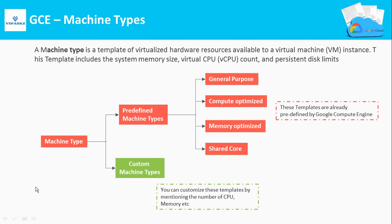Next is Machine Types. A machine type is a template of virtualized resources used to define the number of CPUs, memory, persistent disks, network, and so on. Google offers two types: predefined machine types and custom machine types. In the custom model, you can customize the CPU and memory resources. In predefined machines, everything is set by Google Compute Engine — you simply pick a template, such as 4 CPUs and 16 GB of RAM. Predefined machine types are classified into different families: General Purpose, Compute Optimized, Memory Optimized, and Shared Core, each with multiple templates.